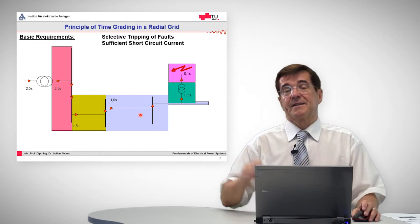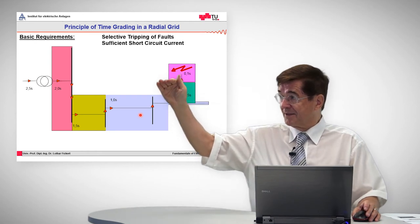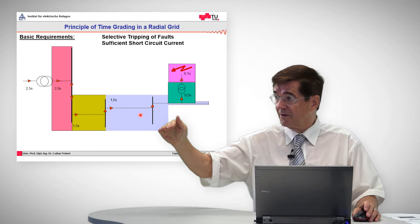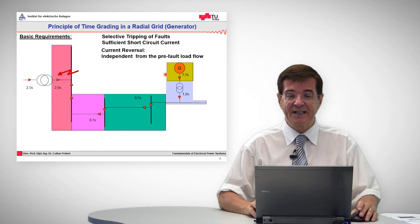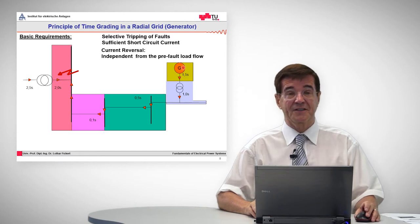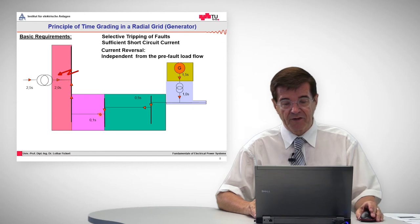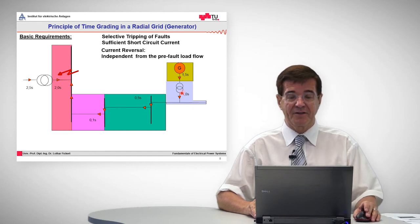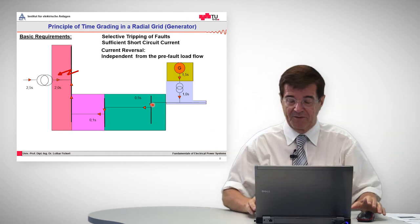The principle is that the grading, the time grading, increases from the last point of the grid to the source. When in contrast one changes the infeed so that another source is at the end of the grid, then one would need exactly the reverse order of timing. These protection times are graded in the opposite way and that may cause problems.